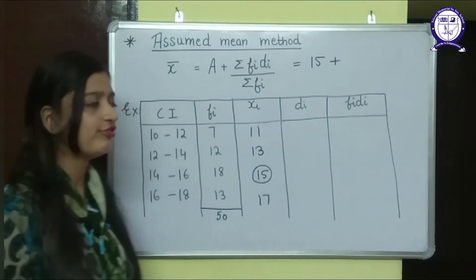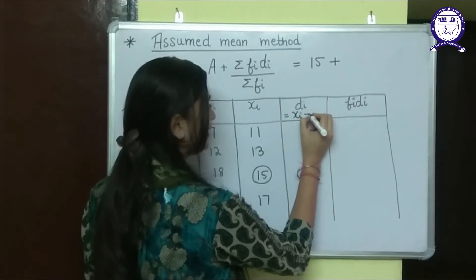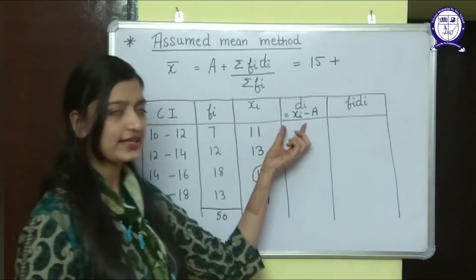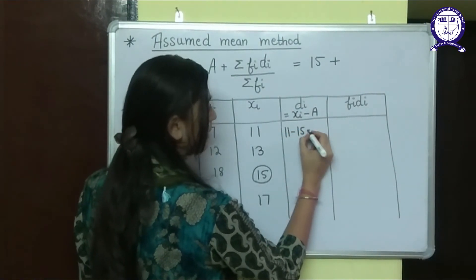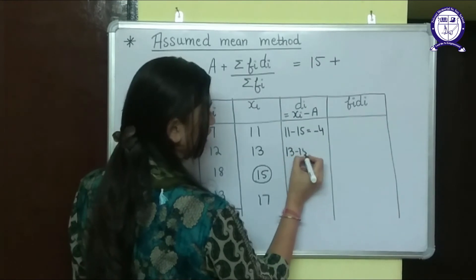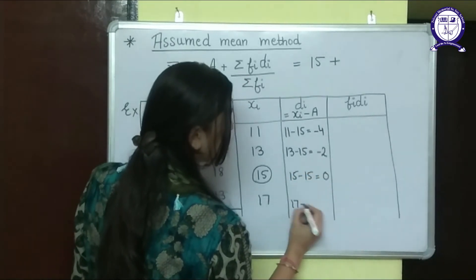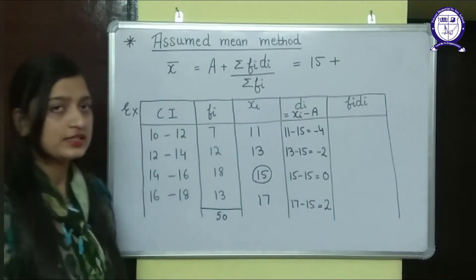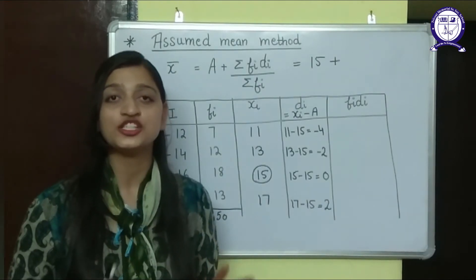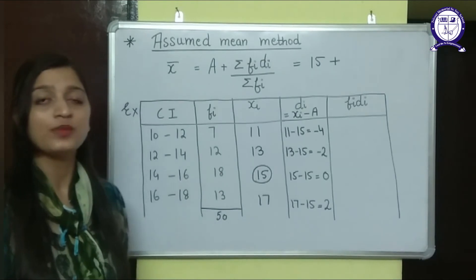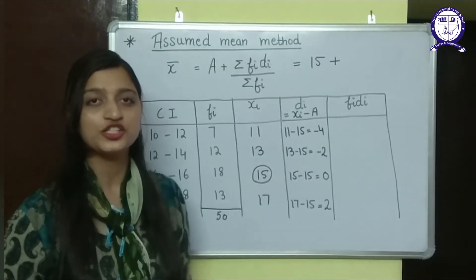d_i has the formula x_i minus A. So: 11−15 = −4; 13−15 = −2; 15−15 = 0; 17−15 = 2. You can see I get very small values here — that is why this method is used, because in the direct method the calculations are very large. It was very difficult to multiply large numbers, so using the assumed mean method makes the calculation easier.